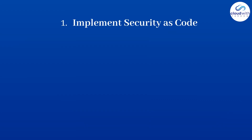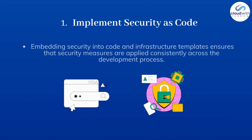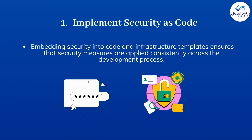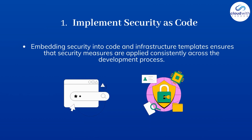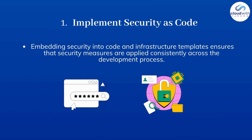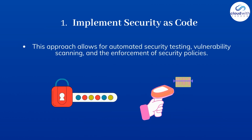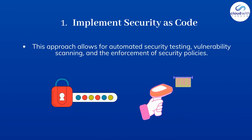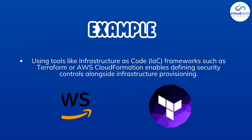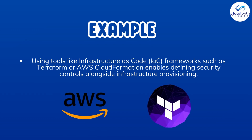Point 1: Implement security as code. Embedding security into code and infrastructure templates ensures that security measures are applied consistently across the development process. This approach allows for automated security testing, vulnerability scanning, and the enforcement of security policies. For example, using tools like infrastructure as code frameworks such as Terraform or AWS CloudFormation enables defining security controls alongside infrastructure provisioning.